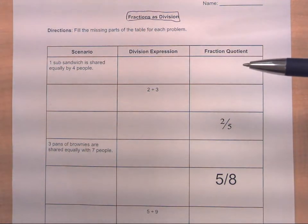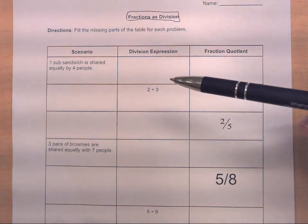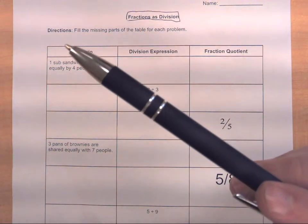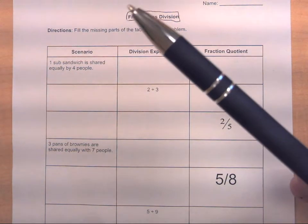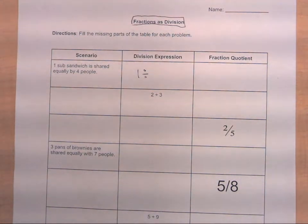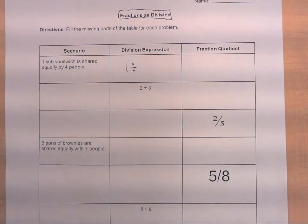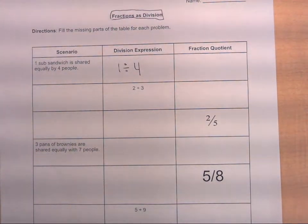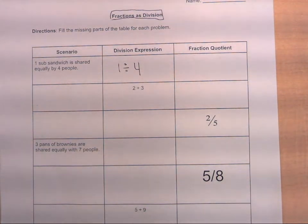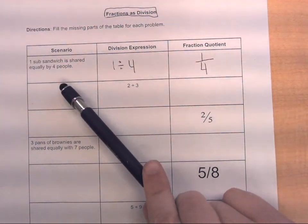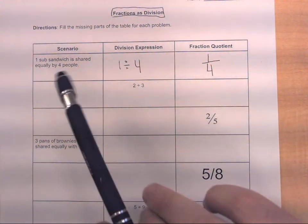We need to know what is being divided — that's our dividend, the first number. We can either divide one sub-sandwich or four people; clearly we are dividing one sub-sandwich. So one becomes our dividend. The four people represents how many equal groups we place the sandwich into. The complete division expression is one divided by four. The fraction quotient — how much sandwich each person receives — would be one-fourth.